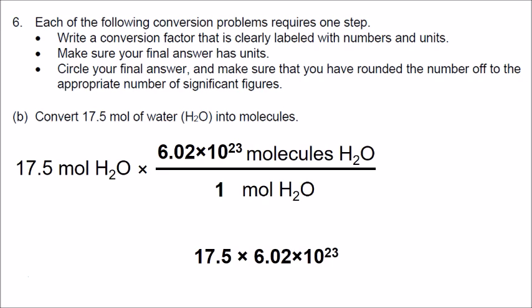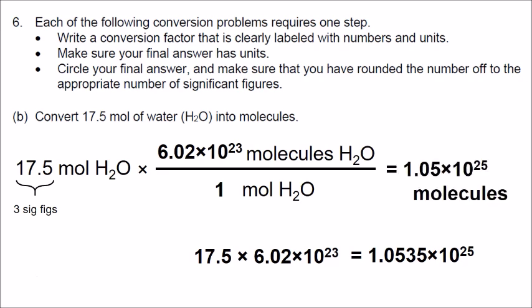Now that we've set up our conversion factor correctly, we do the math and round off our answer to the proper number of significant figures. We do 17.5 times 6.02 times 10 to the 23rd, and our calculator gives us 1.0535 times 10 to the 25th power. The given number has 3 significant figures, so our answer is rounded off to 3 significant figures: 1.05 times 10 to the 25th molecules of water.